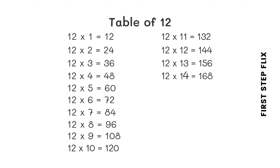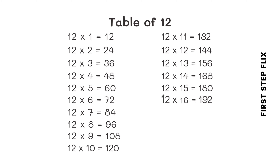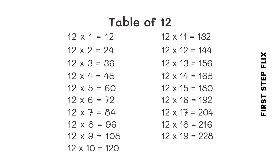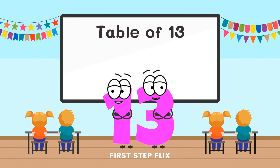12 fourteens are 168. 12 fifteens are 180. 12 sixteens are 192. 12 seventeens are 204. 12 eighteens are 216. 12 nineteens are 228. 12 twenties are 240.